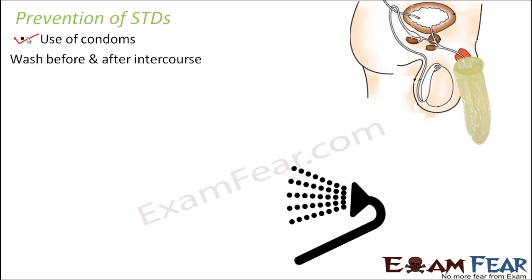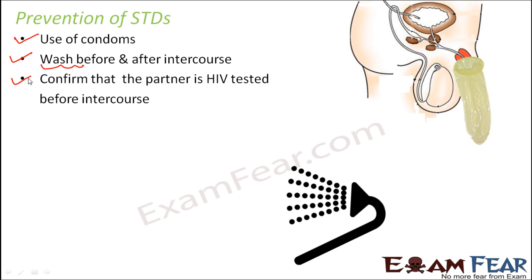The next option is to wash before and after intercourse. When you wash, proper hygiene is maintained so that any kind of infection which might have taken place, you get rid of it. Also, confirm that the partner is HIV tested before intercourse — that is very, very important. If you know that the partner is already HIV infected, your chances of getting the disease are very high, so you should always confirm that the partner is HIV tested.